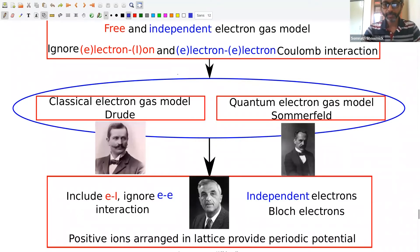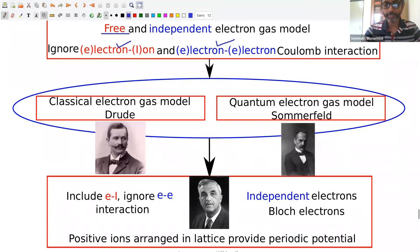Hello friends. Let me start with an overall summary of physics of electronic materials at different levels. The simplest theory ignores electron-ion and electron-electron interaction. Ignoring electron-ion interaction is known as the free electron gas model, and ignoring electron-electron interaction is known as the independent electron gas model.